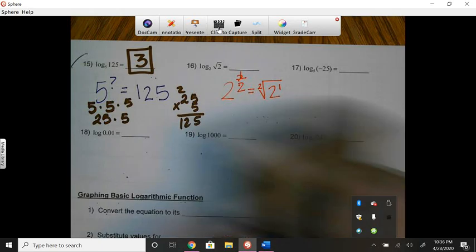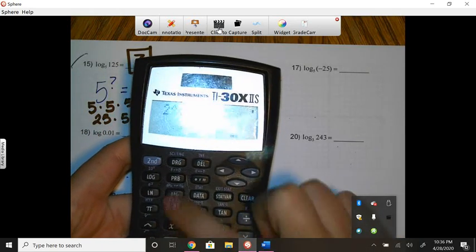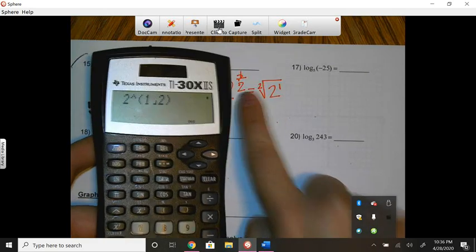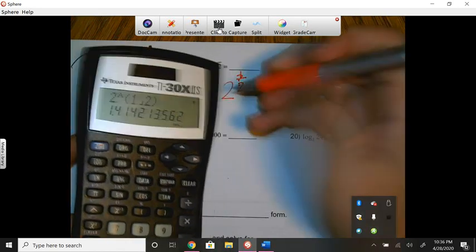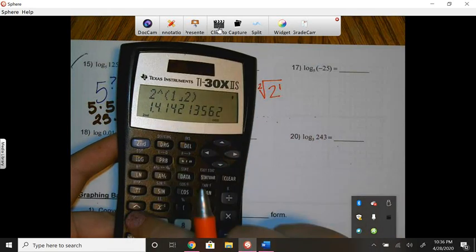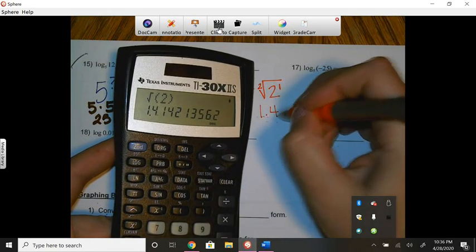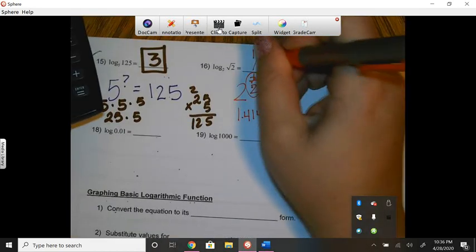So if we check this, 2 raised to the 1 half power. Okay? So if the exponent's 1 half, let's see if we get this. So if I put that in my calculator, we would get 1.414. And then if I put the square root of 2 in the calculator, we get 1.414, etc. We get the same value. So the exponent is 1 half.